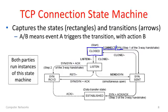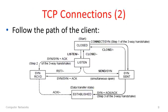We would like a connection establishment to go from the closed state — when no one is connected — to the established state on both sides, so that after the three-way handshake both sides think they've moved from closed to established. Let's follow this diagram and see the path through this finite state machine for a client.